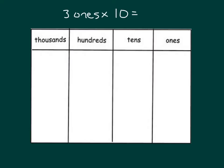Let's model this problem using this place value chart. We have 3 ones times 10, so we'll start by showing 3 ones, and then we have a group of 3 ones. How many groups of 3 ones do you see? Just one, and in this case we are multiplying by 10. So we can move that group, when we multiply by 10, to the tens place, so that 3 ones times 10 is equal to 3 tens.